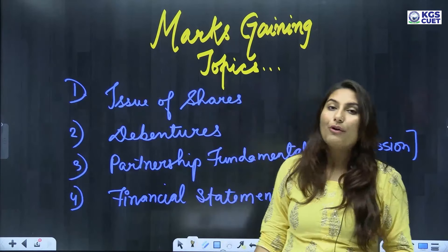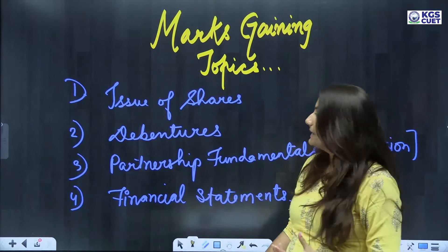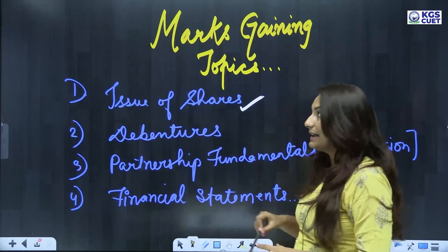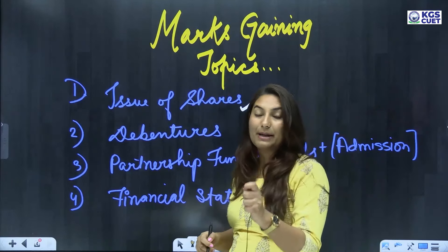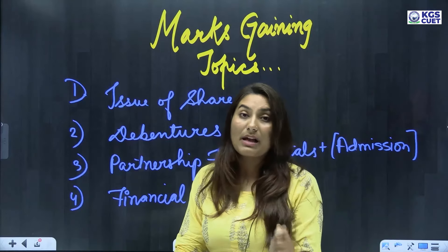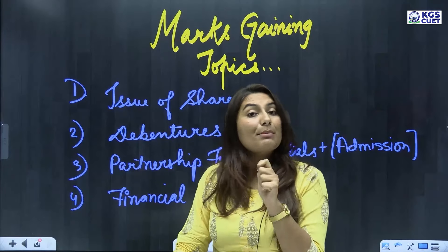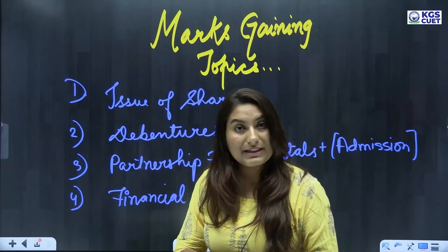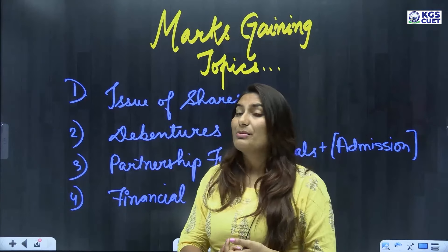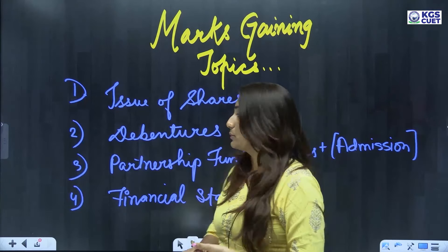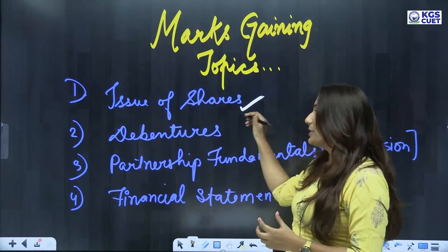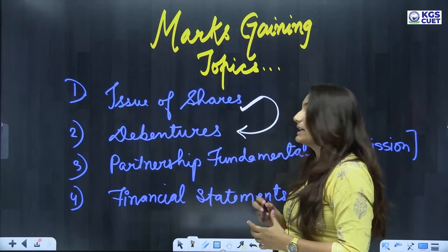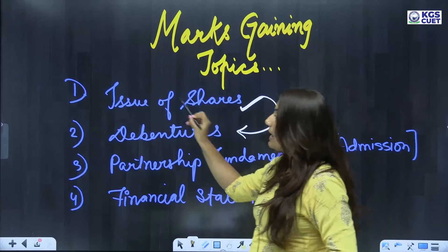First is issue of shares — you can attempt up to 18 marks from this topic. If you have done issue of shares well, with good journal entries and pro-rata allotment, you can score here. Second is debentures — if you have done issue of shares, debentures will also be easy since both involve similar journal entries. Third is partnership fundamentals, which is also marks-gaining.